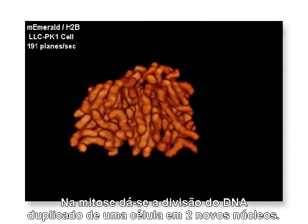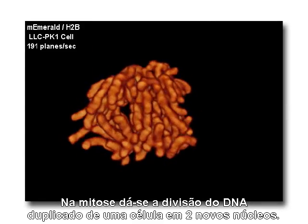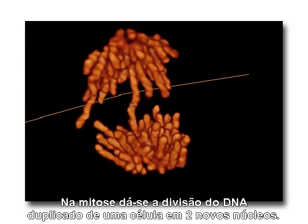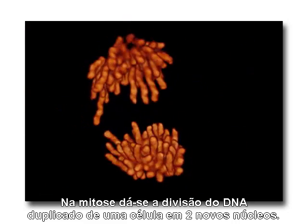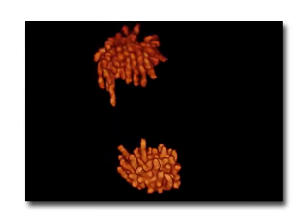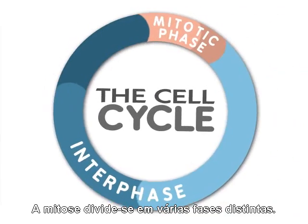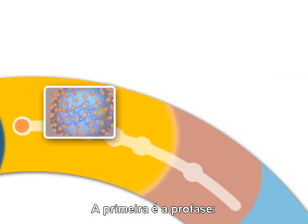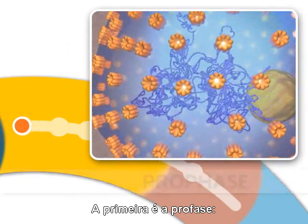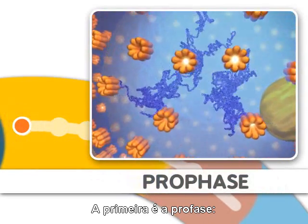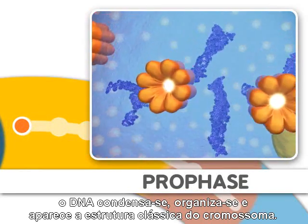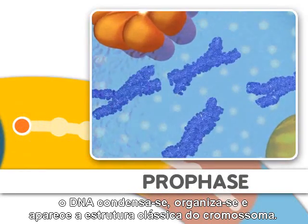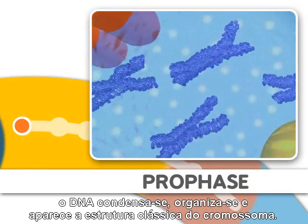Mitosis is the process of dividing the duplicated DNA of a cell into two new nuclei. Mitosis is split into distinct stages. The first stage is prophase, where the DNA condenses, organizes, and the classic chromosome structure appears.